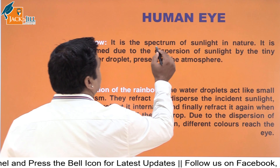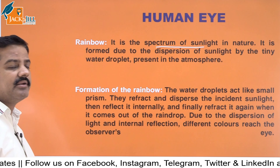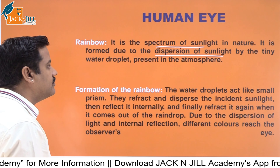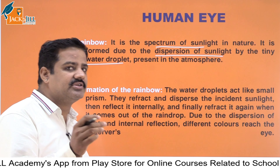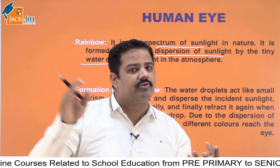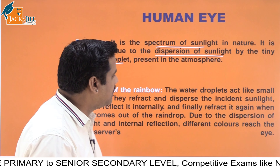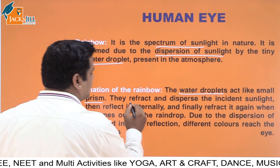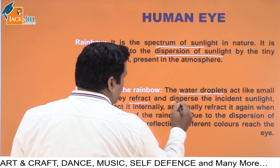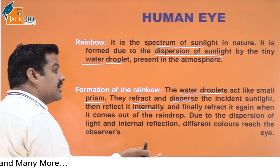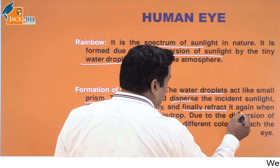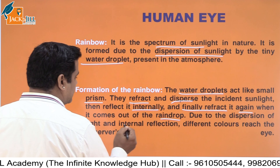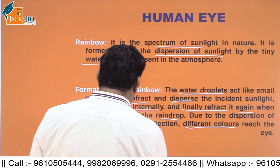Rainbow is the spectrum of sunlight in nature. Without any prism, when the spectrum appears automatically in nature, it is called a rainbow. It is formed due to dispersion of sunlight by tiny water droplets present in the atmosphere. These droplets act like a prism and disperse the incident sunlight. The water droplets refract and disperse the incident sunlight, then reflect it internally, and finally refract it again when it exits the raindrop. Due to dispersion, different colours reach the observer's eyes.